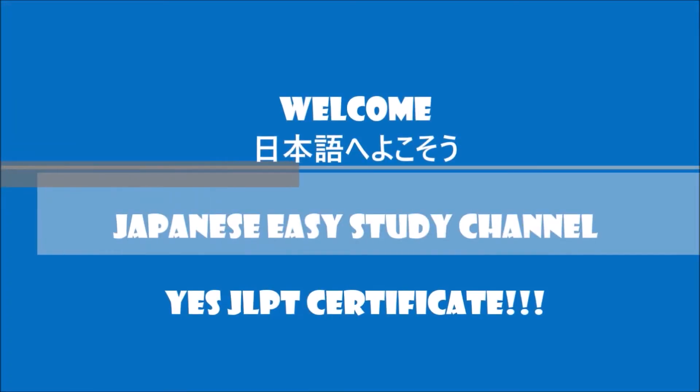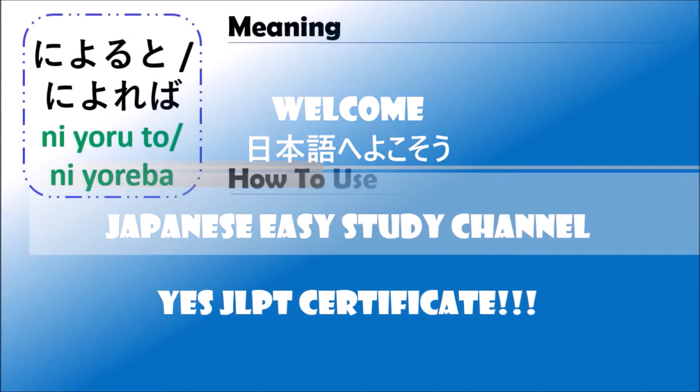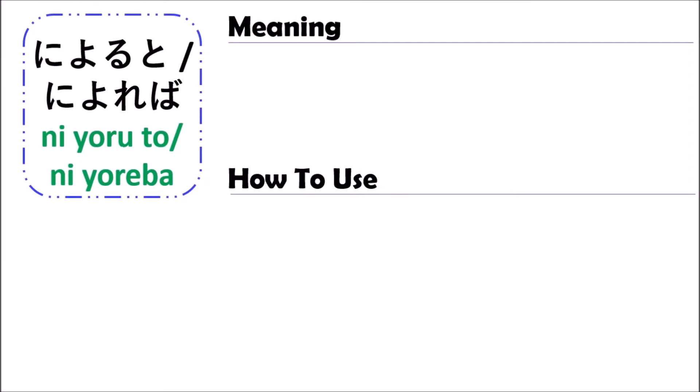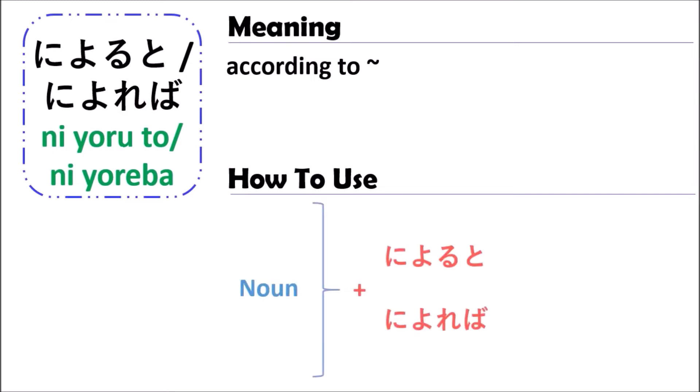This is the grammar of ni yoru to or ni yoreba. The grammar of ni yoru to or ni yoreba means 'according to something.' In Japanese, when you use this grammar, you can use the noun only. That means you should start with your noun, and after that it is followed by ni yoru to or ni yoreba.